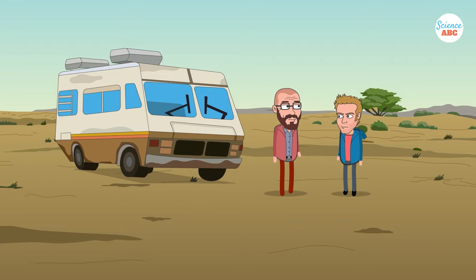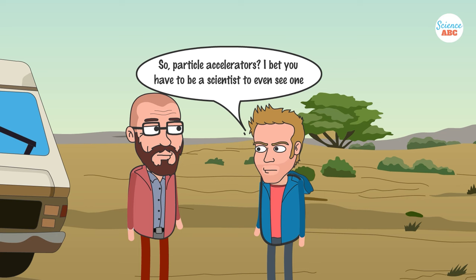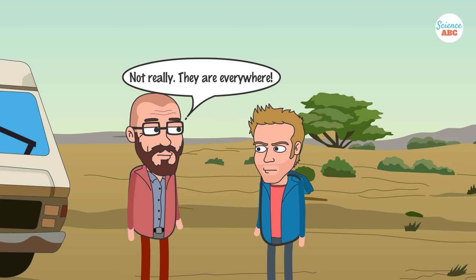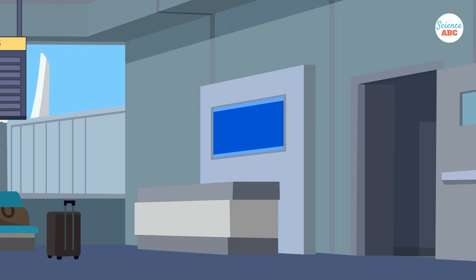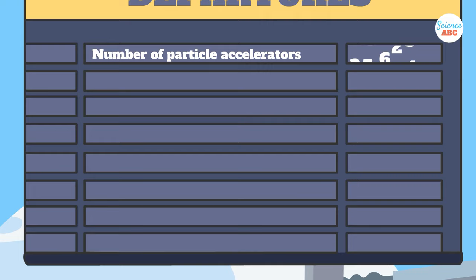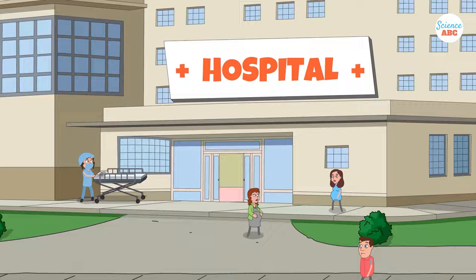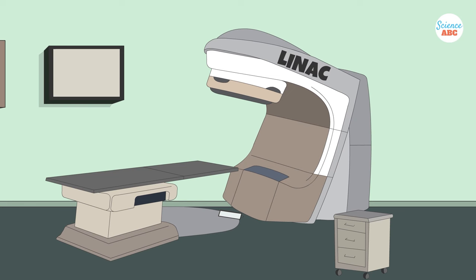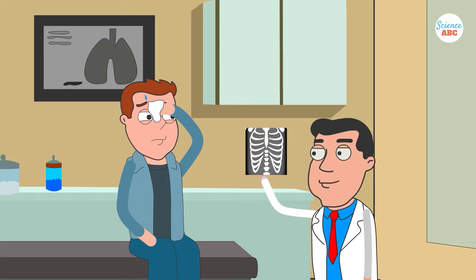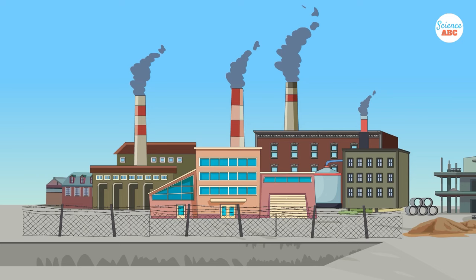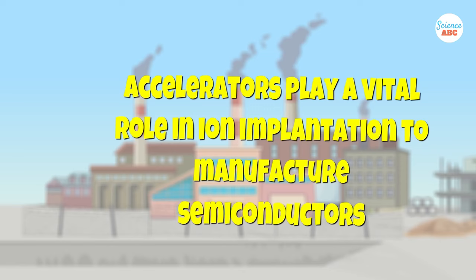Contrary to popular belief, particle accelerators are not all highly complicated machines that only exist in huge laboratories or movies. A particle accelerator can be as small as a few inches across. In fact, the first accelerator ever built was less than 5 inches across. There are currently more than 30,000 particle accelerators in the world. Although they are often associated with particle research and understanding our universe's origins, accelerators are also used in medicinal sciences. Millions of patients around the world are diagnosed using medical appliances that are essentially particle accelerators. Linear accelerators can generate X-rays and high-energy electrons, which can be used in medical diagnostics and radiation therapy for cancer patients. Furthermore, accelerators are also used in ion implantation to manufacture semiconductors.